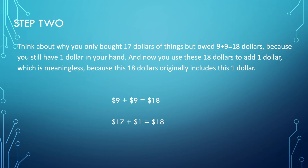Step 2: Think about why you only bought $17 of things, but owed 9 plus 9, which is $18 — because you still have $1 in your hand. And now, you used these $18 to add $1, which is meaningless, because this $18 originally included this $1.